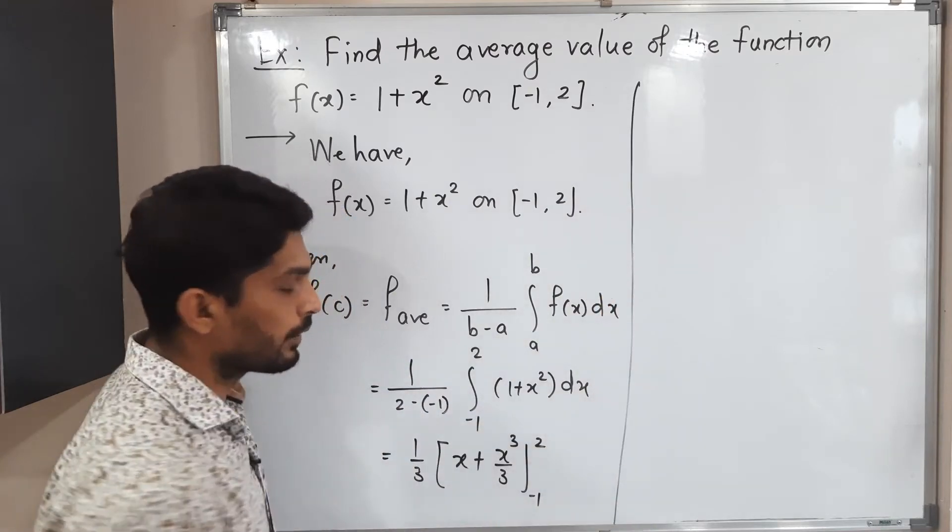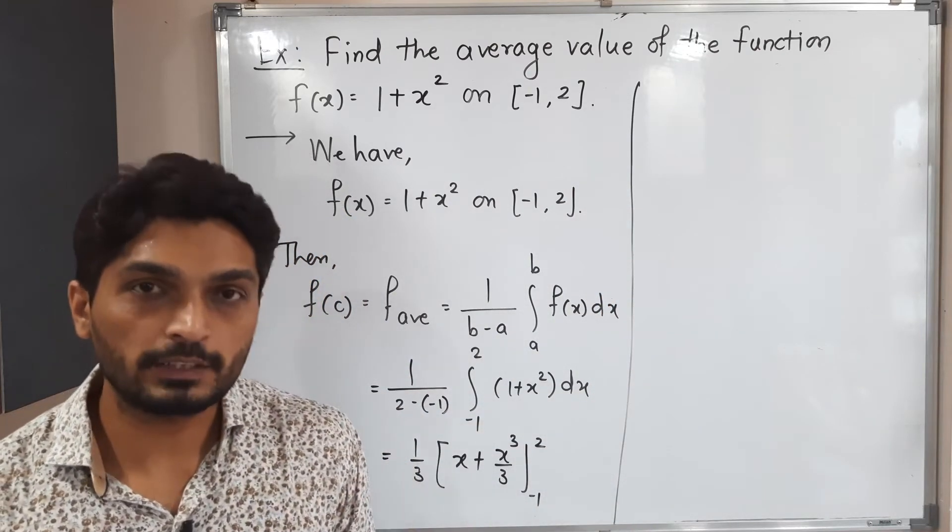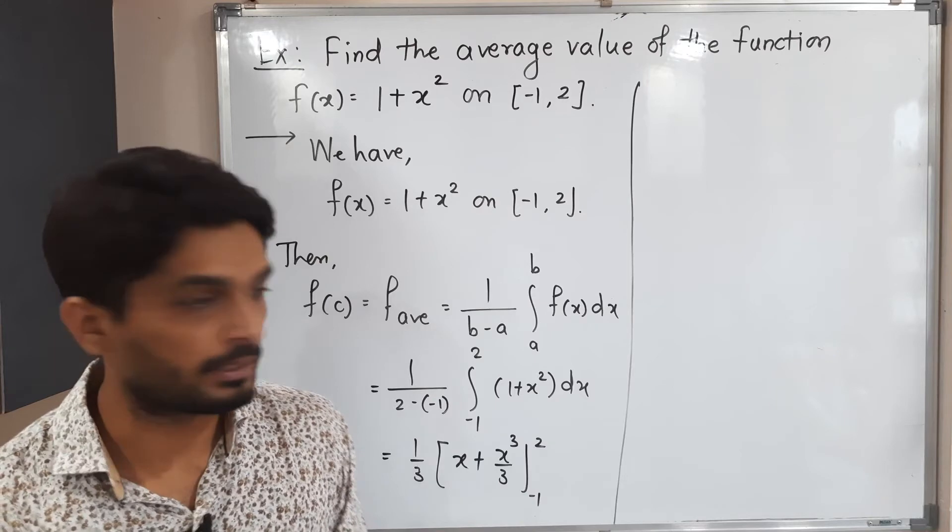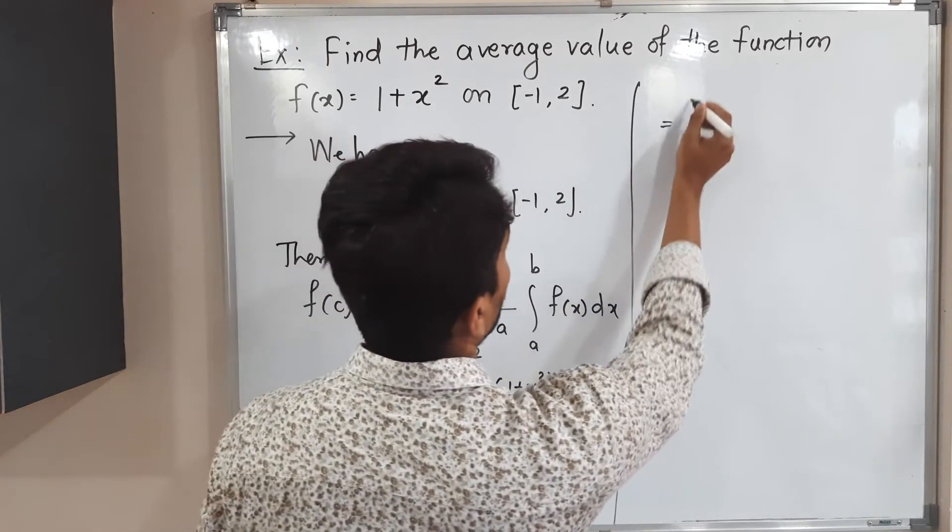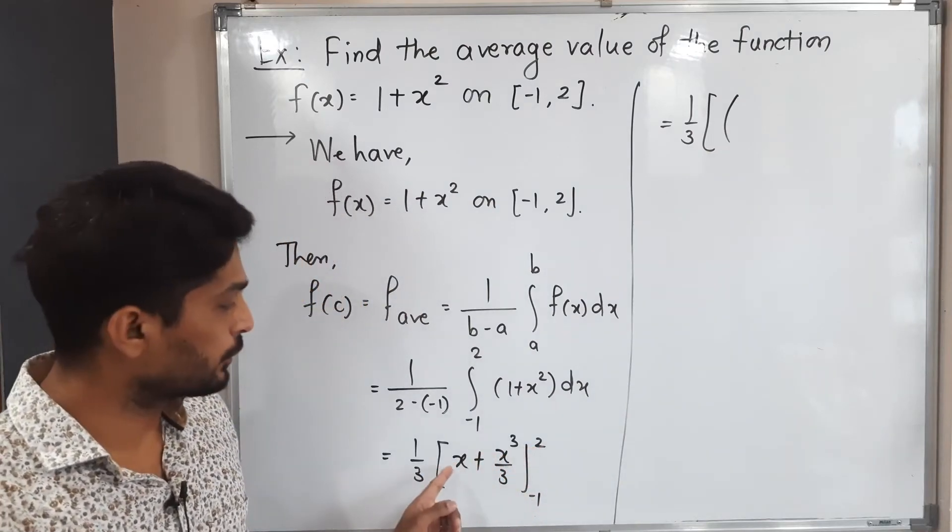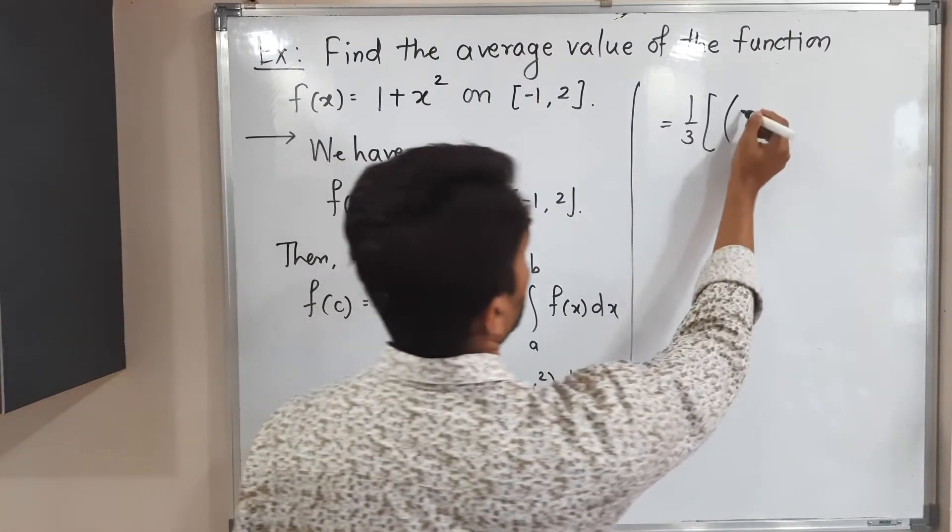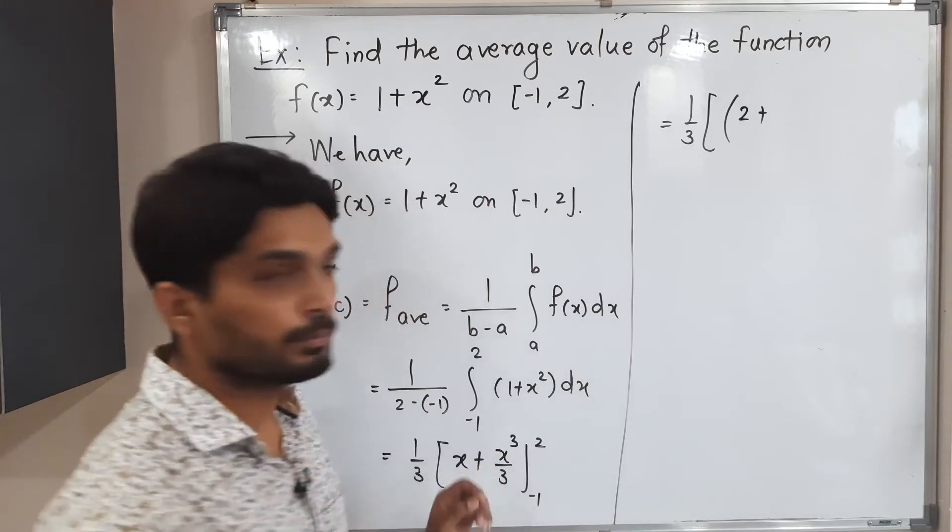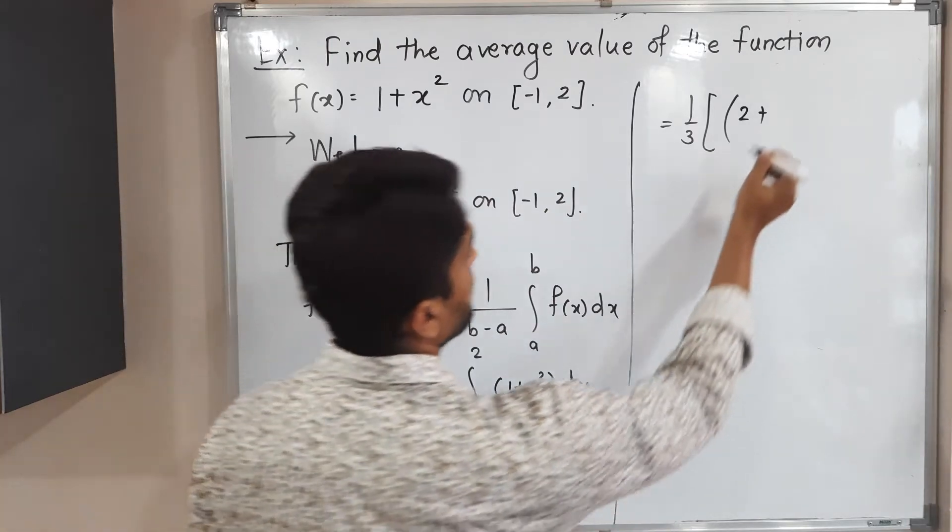You know well what we do after this. We put the upper limit first minus we put the lower limit. So this is equal to 1 by 3. Let us see what will happen if I put upper limit 2. 2 cube is 8, so 8 by 3.